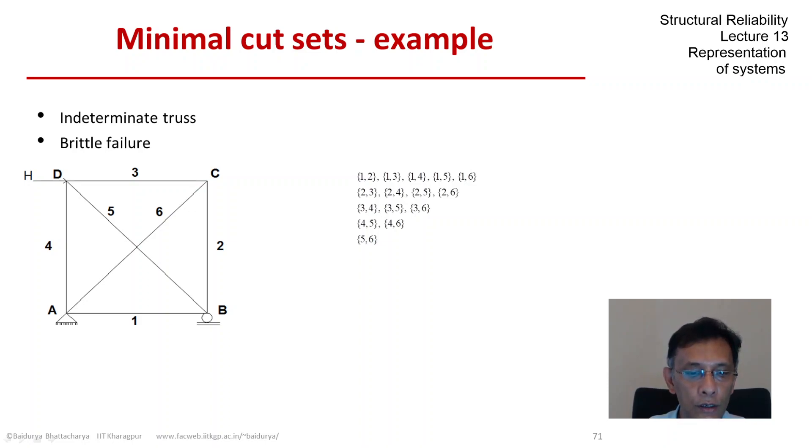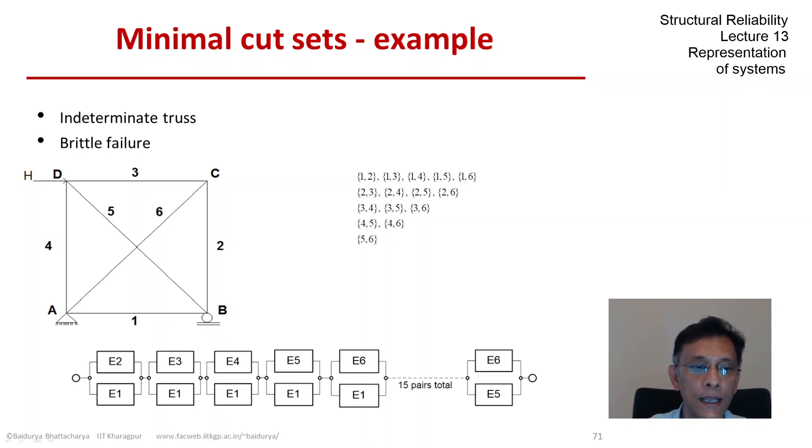We could draw the reliability block diagram equivalently involving these minimal cut sets, and they would look like this. Earlier, we showed the RBD involving the five out of six approach. Now we have the RBD coming out of the minimal path set consideration.